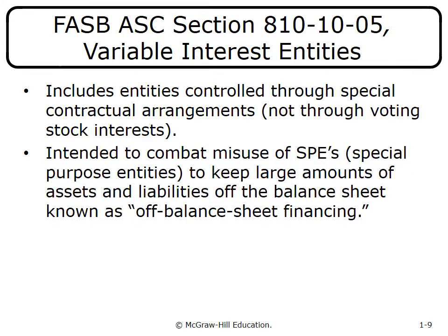FASB ASC Section A10 discusses variable interest entities, covered in Chapter 6. These are entities controlled through special contractual arrangements rather than voting stock, intended to combat misuse of special-purpose entities—preventing corporations from keeping large amounts of assets and liabilities off the balance sheet, as Enron did.